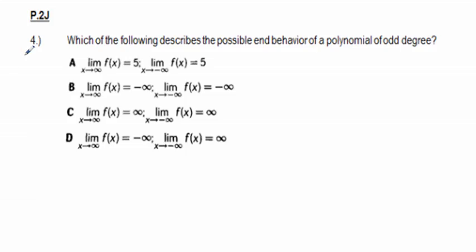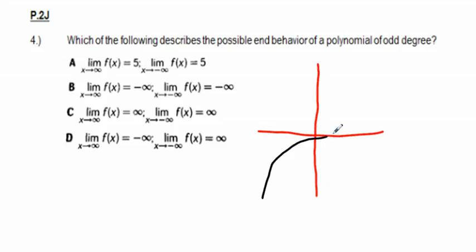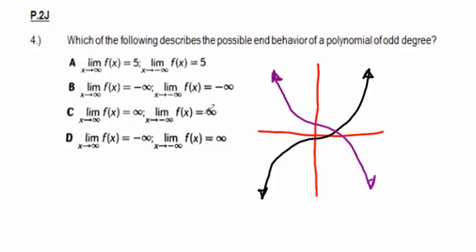Problem 4: which of the following describes the possible end behavior of a polynomial of odd degree? For an odd-degree polynomial, the function must either start low and end high, or start high and end low — the limits must have opposite signs. Answer C has both limits as infinity (same sign), not odd. Answer D has the limit as x→∞ equal to -∞ and as x→-∞ equal to +∞, giving opposite signs, so D is correct.